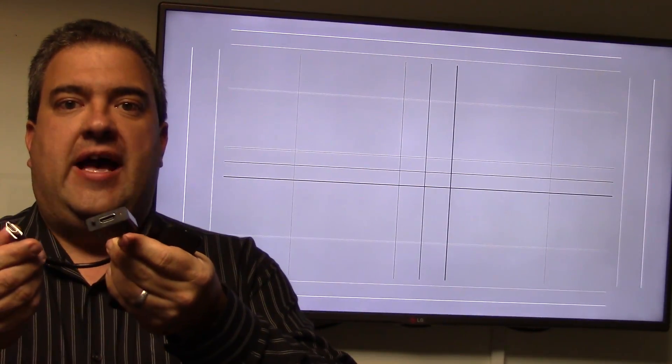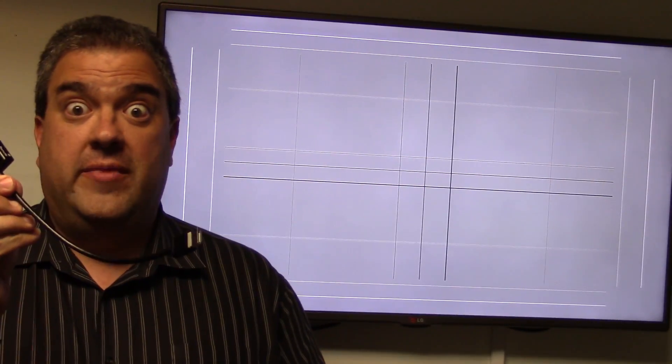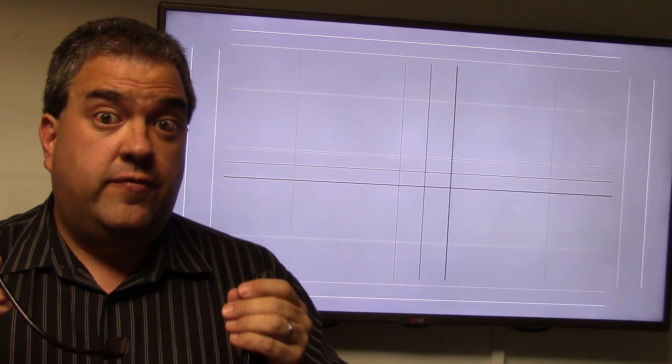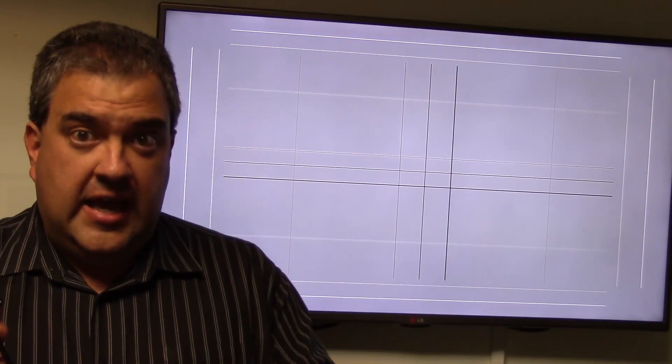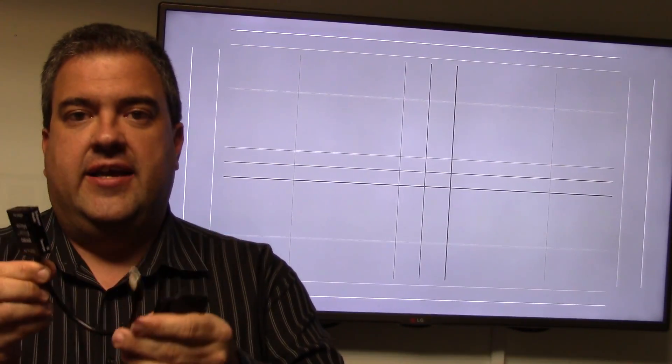So believe it or not, in this tiny little package, HDMI in and out, little bitty thing that will fit right behind your wall-mounted TV is a professional 4K video scaler, as well as a video processor, video enhancement, all built into this little package.